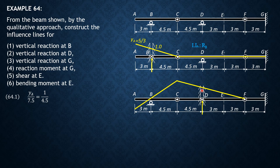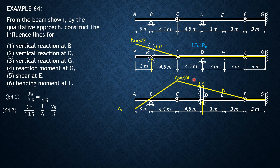The ordinate over D is 1, and the rest will be determined by similar triangles. Call those YA, Y sub C, YE — the rest will be 0. From the figure: Y sub C is to 10.5 equals 1 is to 6 equals YE is to 3. Solving: Y sub C equals 7 over 4, YE equals 1.5. Then negative YA is to 3 equals 1.75 is to 4.5, so YA equals negative 7 over 6. So that's the influence line for RD.